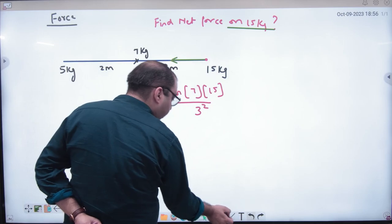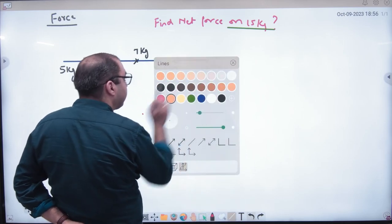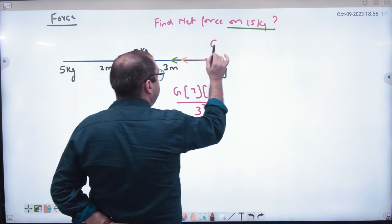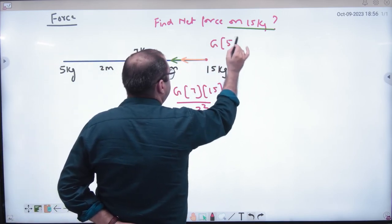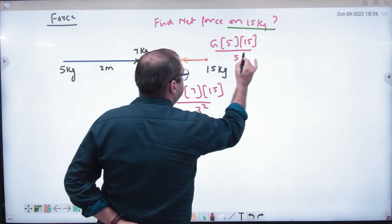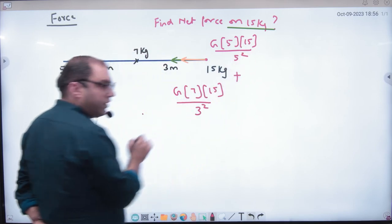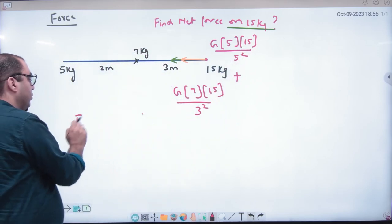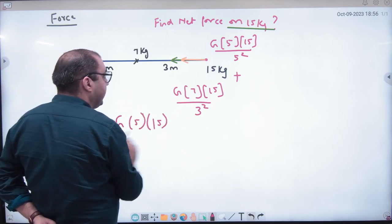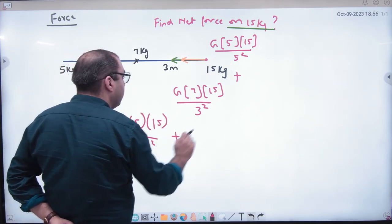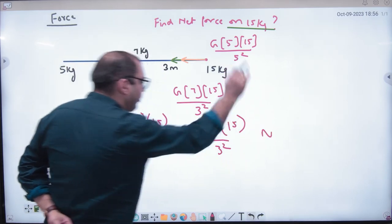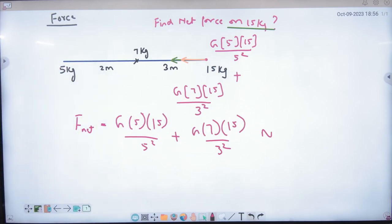Similarly 5 kg will attract. G into 5 into 15 divided by, what is the distance between them? 5. 5 ka square. So both we will add, net force you asked. So the net force value will be equal to G into 5 into 15 by 5 square plus G into 7 into 15 by 3 square. This many newton answer will come. Is this point clear? Any doubt in this?